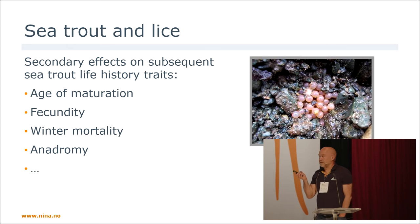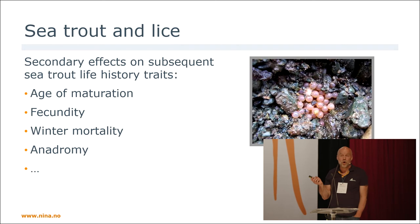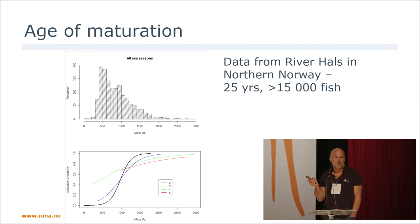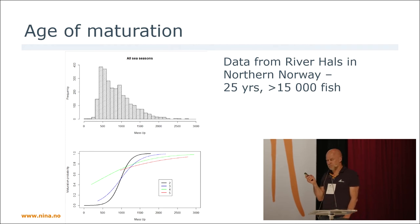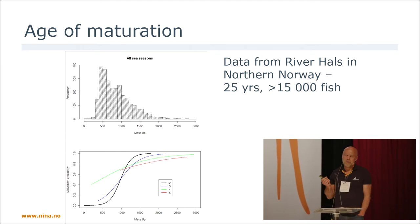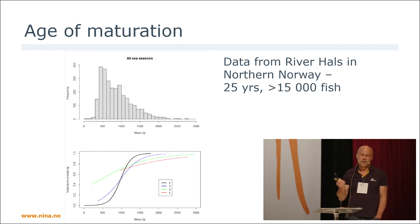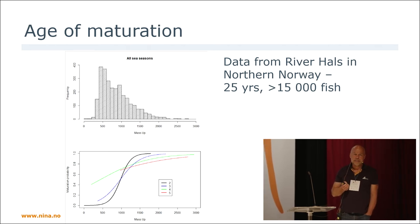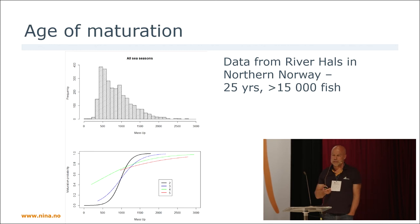For all of these secondary effects, we have little or no good empirical data — we have some, and we are trying to collect more. Due to the short time here, I will focus on the effects on age of maturation. The data I will use are from the river Halselva in northern Norway, where we have had a fish trap tagging and registering all passages migrating down and up into the water course. We have 25 years of data and more than 15,000 trout have been tagged.